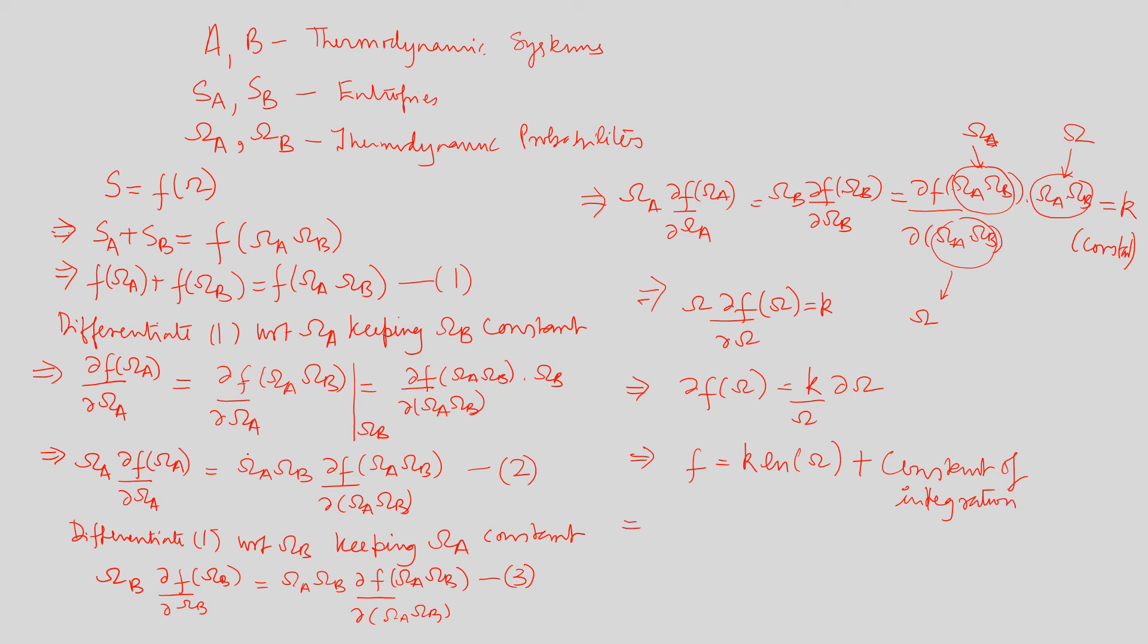We know f is nothing but f of omega is nothing but entropy. So this is entropy is equal to K times ln of omega. And let us denote our constant of integration in terms of entropy as S0. Now from third law of thermodynamics, we know that as our temperature T tends to zero, the entropy tends to zero, which means that S0 should have value zero. And that gives us the expression that entropy is nothing but equal to K times natural log of the thermodynamic probability, which is our desired relation.